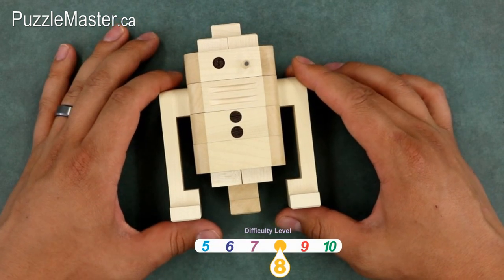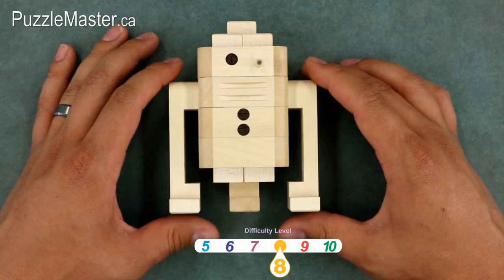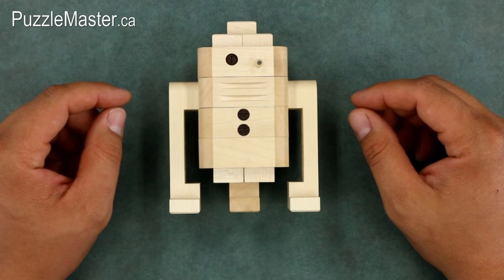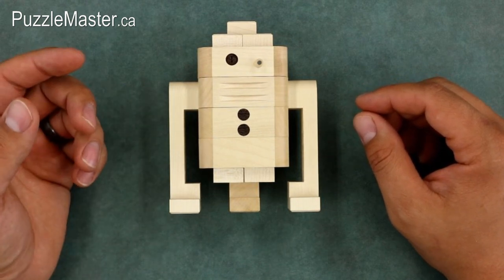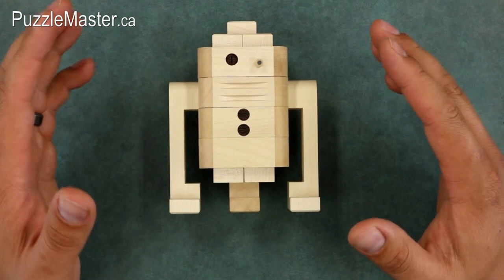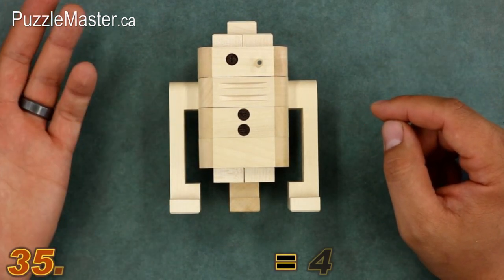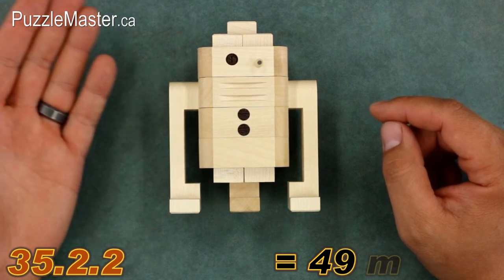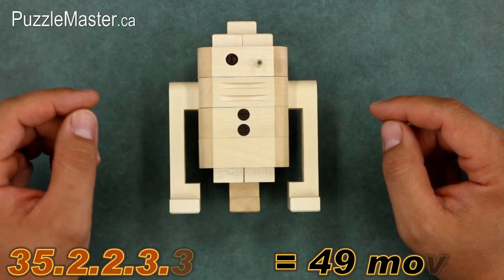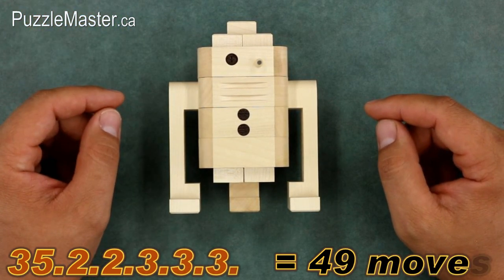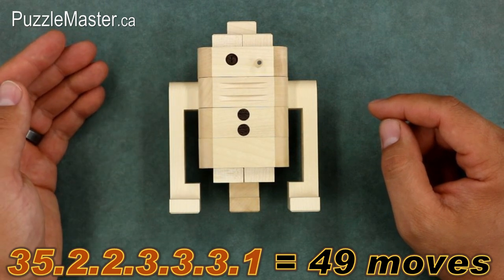It's a level eight on the Puzzle Master difficulty rating scale. Like all Pelikan puzzles, its moves are broken down with decimal notation. It's 49 total moves, notated as 35.2.2.3.3.3.1. So 35 is the first number, then 0.2, 0.2, 0.3, 0.3, 0.3, 0.1.